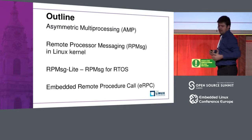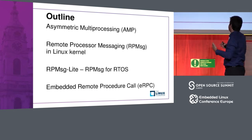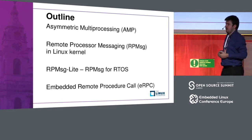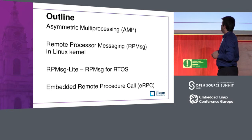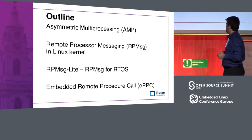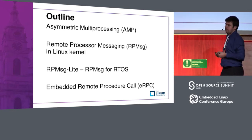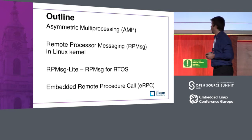During our presentation, we will introduce you to AMP — Asymmetric Multi-Processing — as we understand it, with Remote Processor Messaging in the Linux kernel, then with ArcMessageLite, which is an implementation optimized for real-time operating systems for small devices. We will end with the Embedded Remote Procedure Call library, which makes it easy to use AMP in your system.